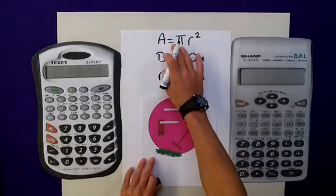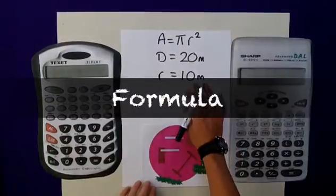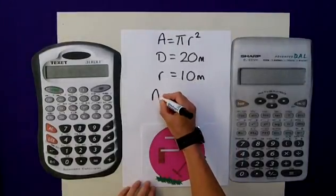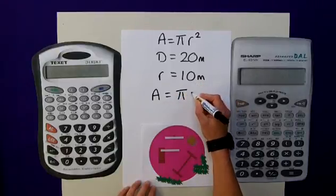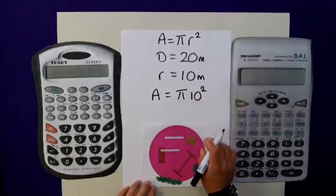So I can now apply this to my formula. Applying this knowledge to my formula gives me an area which is equal to pi multiplied by 10 squared.